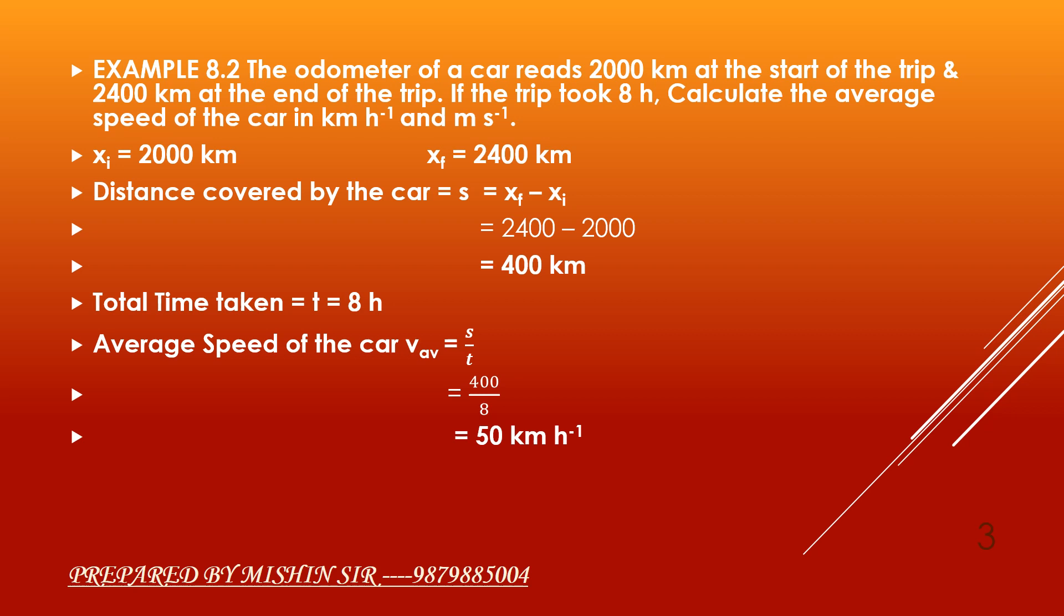we multiply 50 km per hour with 5 by 18 to convert it into m per second. So, 50 into 5 by 18, we get 13.9 meters per second.